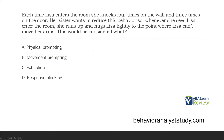Question five: each time Lisa enters the room, she knocks four times on the wall and three times on the door. Her sister wants to reduce this behavior. So whenever she sees Lisa enter the room, she runs up and hugs Lisa tightly to the point where Lisa can't move her arms. This would be considered what? If Lisa can't move her arms, can she engage in the behavior of knocking? She cannot.